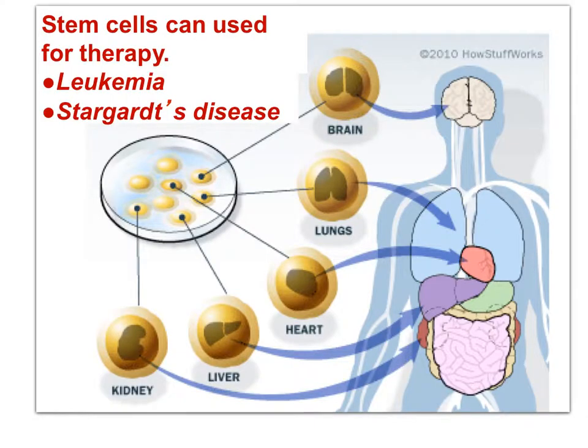Stem cells, as undifferentiated cells, are open to differentiation. They can be cultured to differentiate for therapy to treat leukemia or Stargardt's disease — a disease of the eye. If diseased tissues can be replaced by healthy tissues derived from stem cells, much suffering can be alleviated.